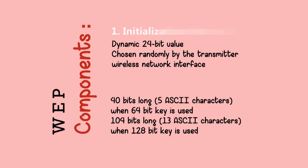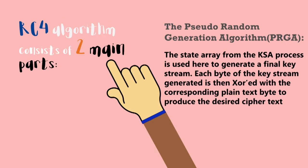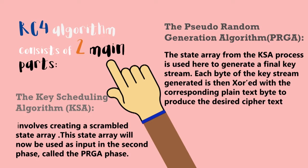WEP Components: 1. Initialization Vector (IV) — chosen randomly by the transmitter wireless network interface. 2. Shared Secret Key. The RC4 algorithm consists of two main parts: the pseudorandom generation algorithm (PRGA), where the state array from the KSA process is used to generate a final key stream. Each byte of the key stream generated is then XORed with the corresponding plaintext byte to produce the cipher text. The key scheduling algorithm (KSA) involves creating a scrambled state array, which is then used as input in the second phase, called the PRGA phase.